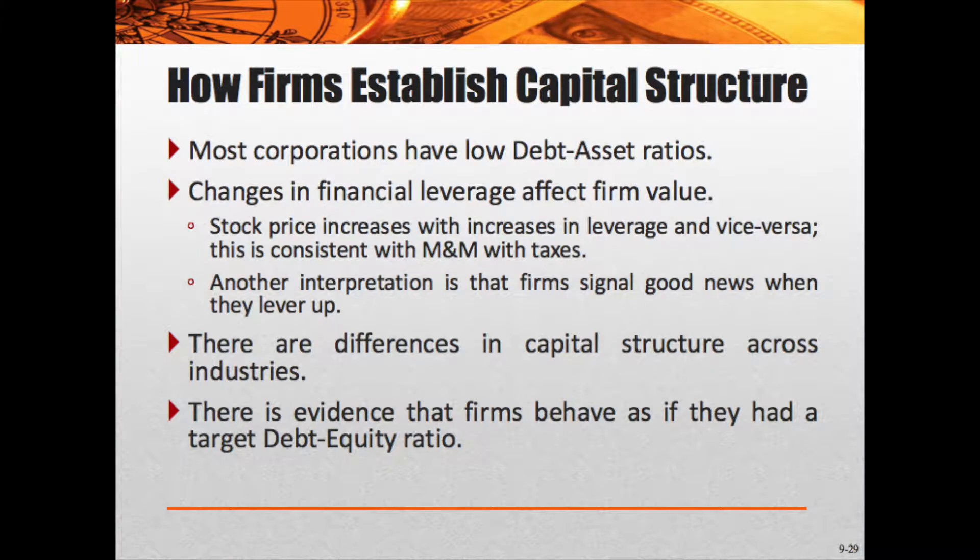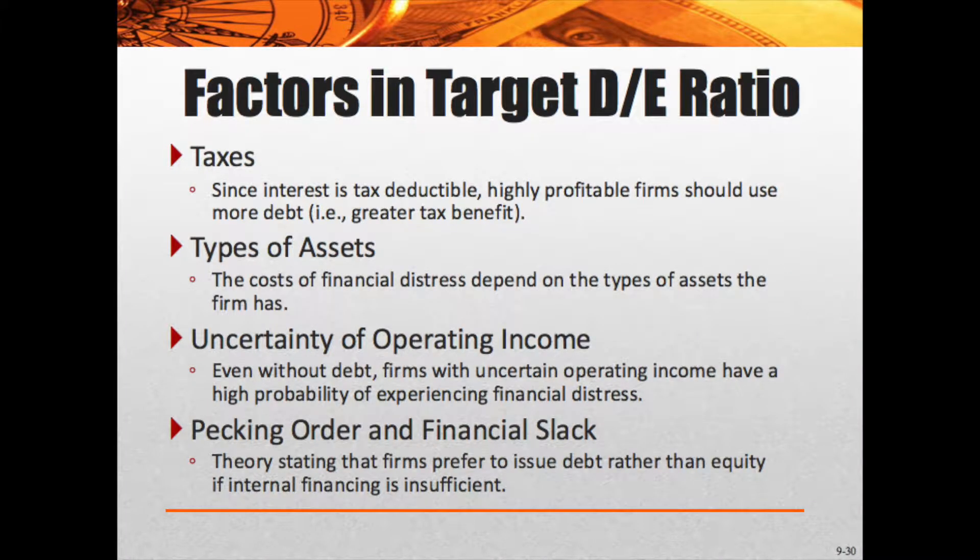There is evidence that firms behave as if they have a target debt-to-equity ratio. They don't want to go too far to either side — they like some leverage they're comfortable with, but not too much. If your equity drops below a certain amount, bond covenants kick in and demand repayment, causing all kinds of problems. So you definitely want to keep your equity at a reasonable level, paying attention to your bond covenants and how risky shareholders perceive you to be.